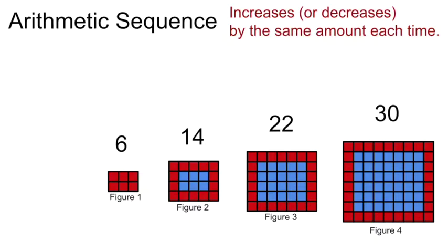So far the sequences we've been looking at are called arithmetic sequences. Arithmetic sequences increase or decrease by the same amount from one figure to the next every time. So for example, in this first one we were counting, first we started with 6 and we added 8 to get to 14, and we added 8 again to get to 22 and we added 8 again to get to 30 and we would continue adding 8s all the way down the line.